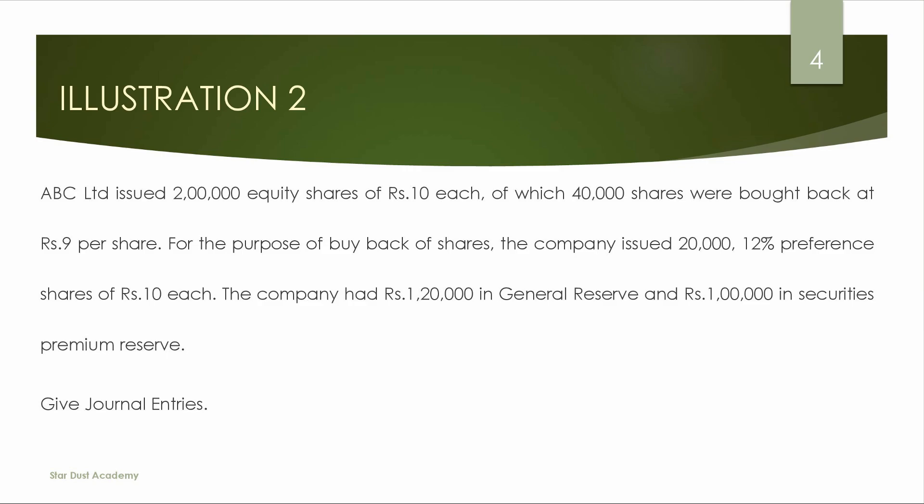Second question: ABC Limited issued 2,000,000 equity shares of rupees 10 each, of which 40,000 shares were bought back at Rs. 9 per share. This is a buyback at a discount — Rs. 9 per share against a face value of Rs. 10. The company also issued 20,000 twelve-percent preference shares of rupees 10 each for the purpose of the buyback. The company had general reserve and securities premium reserve balances available.